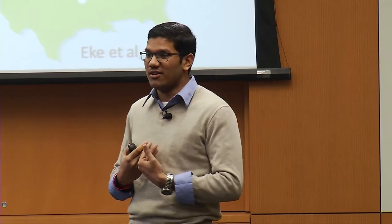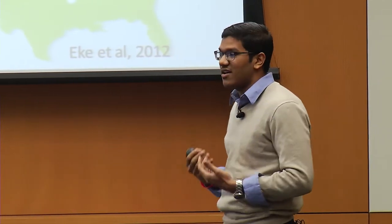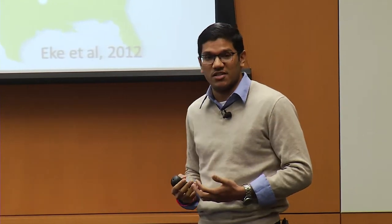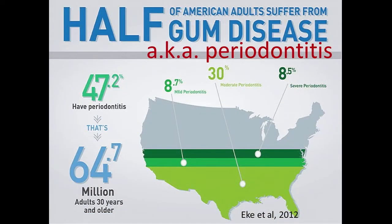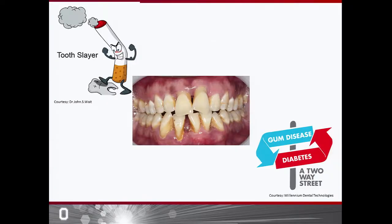Why is gum disease important? Besides being a periodontic resident, greater than 50% of the American adult population suffer from periodontitis or gum disease, and it is a huge economic and health burden. Interestingly, there are only two established risk factors for periodontitis: one is cigarette smoking, and the second is diabetes.